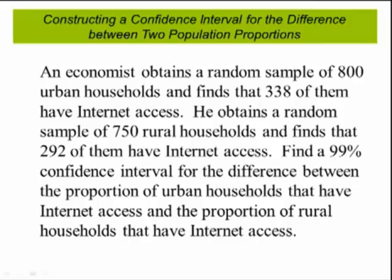Let's do an example. An economist obtains a simple random sample of 800 urban households and finds that 338 of them have internet access. He obtains a simple random sample of 750 rural households and finds that 292 of them have internet access.